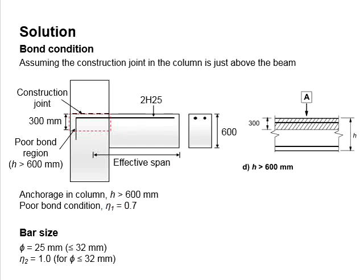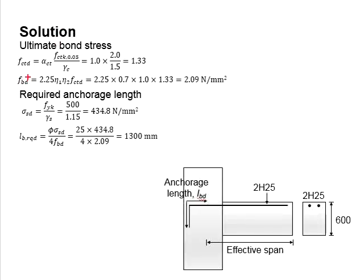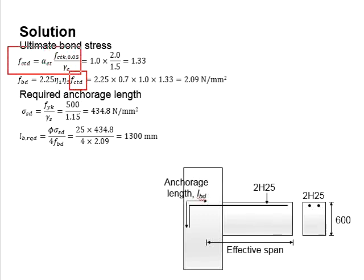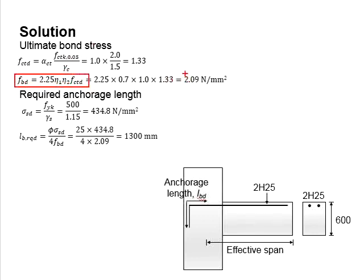Next, we consider the effects of bar size. The bar size given is 25 mm, which is less than 32 mm; therefore η2 equals 1.0. Next, we determine the ultimate bond stress based on the equation. The design tensile stress of the concrete is calculated based on fctk and the partial factor of safety, which is found to be 1.33 N/mm². This gives us the ultimate bond stress equal to 2.09 N/mm².